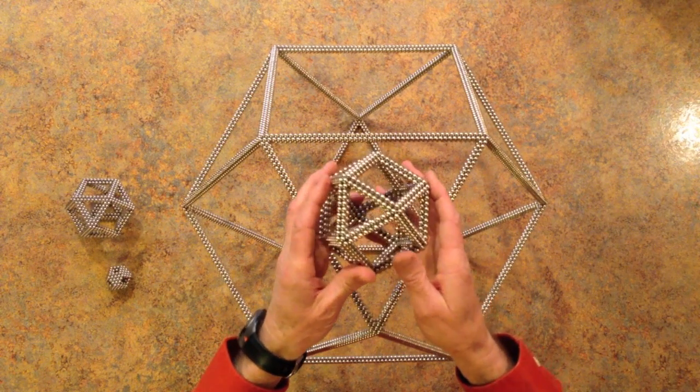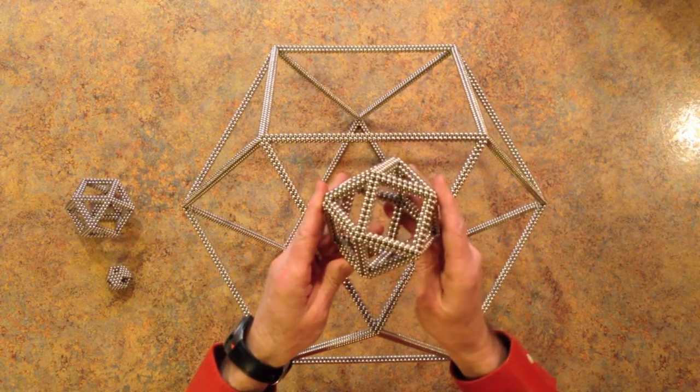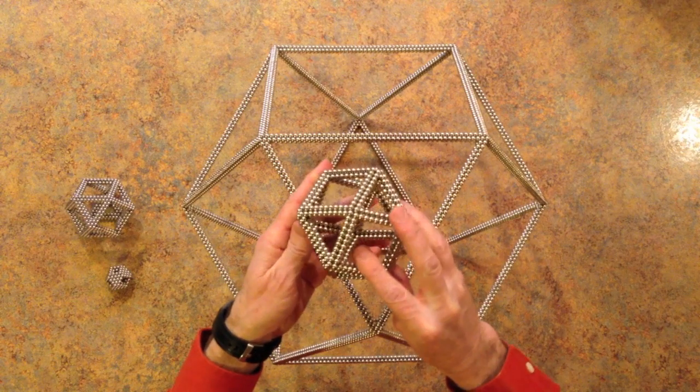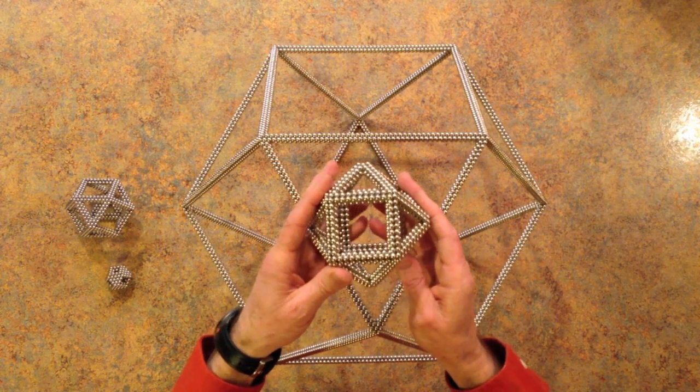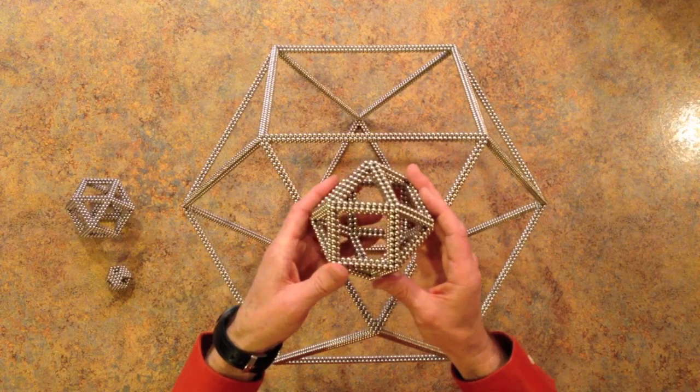The cuboctahedron is one of 13 Archimedean solids which are highly symmetric shapes with two or more types of regular polygonal faces meeting in identical vertices.